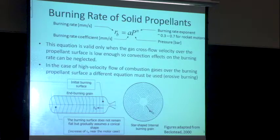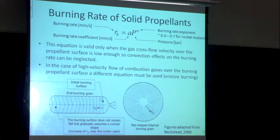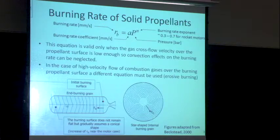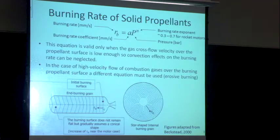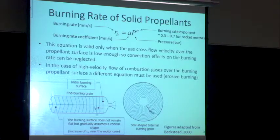As an example in rocket motors, grain configurations are made in different shapes. Imagine a rocket motor where the entire casing is filled with propellant — this is end burning. Ideally, the surface would regress at the same rate. But near the edges, because of boundary layers that start to grow, I can see a non-linear shape across the surface, with the edges burning faster than the center.